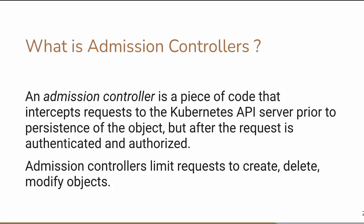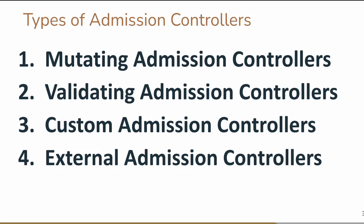How many types of admission controllers are there? Kubernetes supports four types: the first is the mutating admission controller, the second is the validating admission controller, then the custom admission controller, and finally the external admission controller. The mutating and validating admission controllers are the most widely used. Different products built separately from Kubernetes use the external and custom admission controllers to provide policy enforcement.